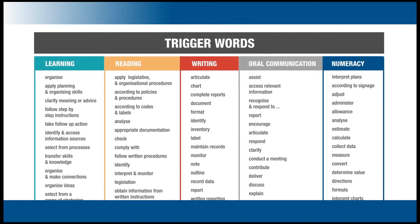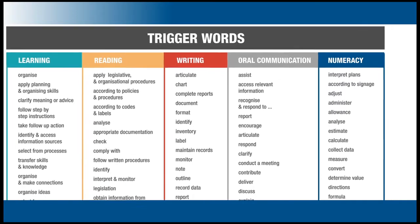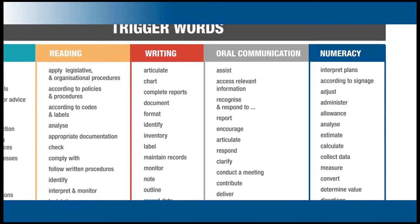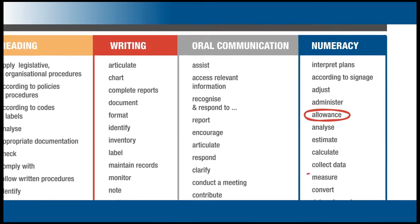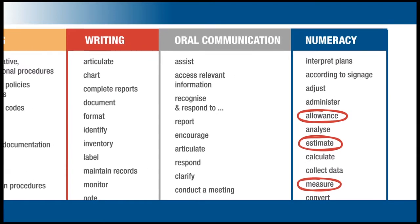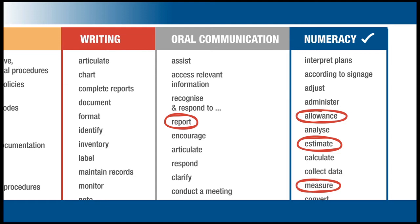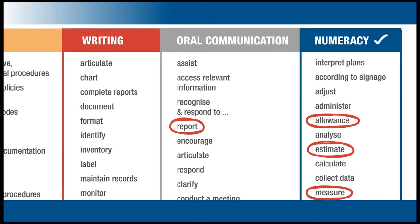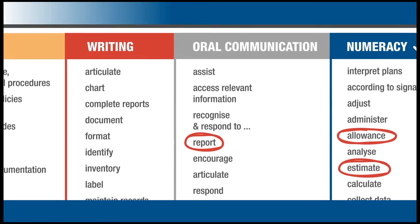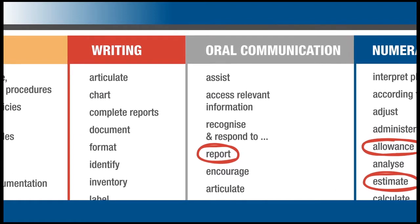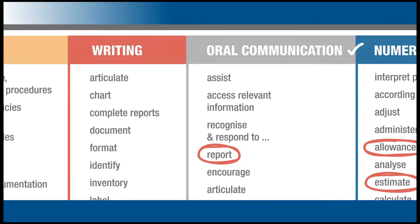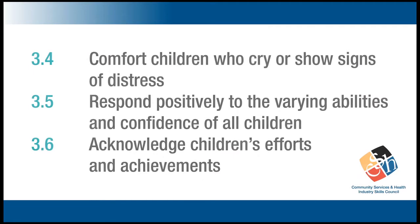Trigger words are great at helping you identify different foundation skills. For example, words like 'allowance,' 'measure,' and 'estimate' are usually about numeracy. However, the term 'report,' which often occurs in units, could refer to an oral report or a written report. As the trainer, you need to identify which foundation skill is being referred to in the context in which you deliver training.